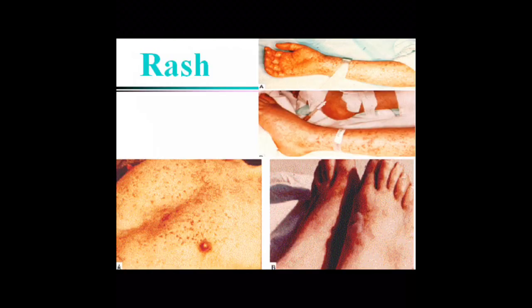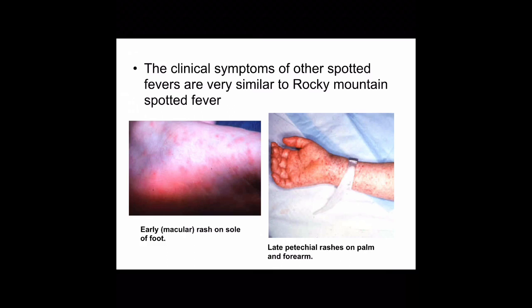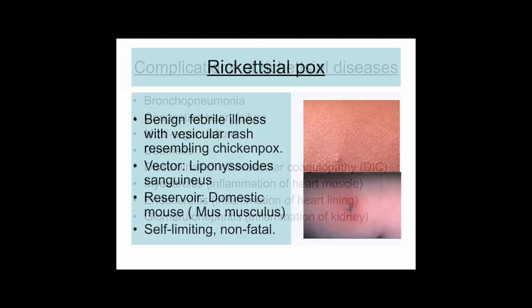Rocky Mountain spotted fever is more similar to typhus fever, but the rash appears earlier and is more prominent. An image shows what the rash looks like on the chest as well as the soles of the feet. We may also see late petechial rashes that present on the palm and the forearm, as shown in the image to the right.